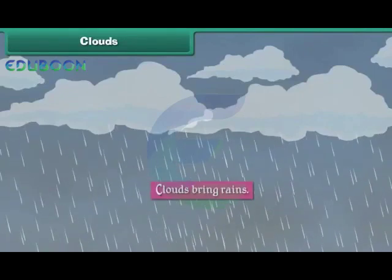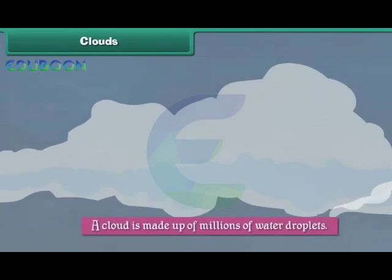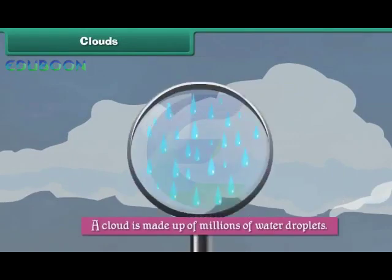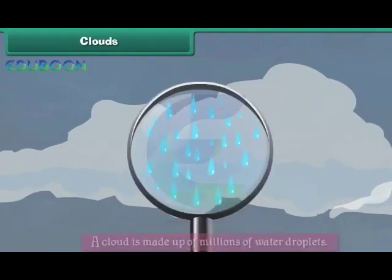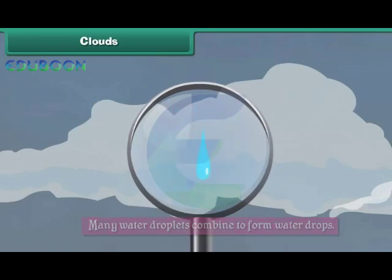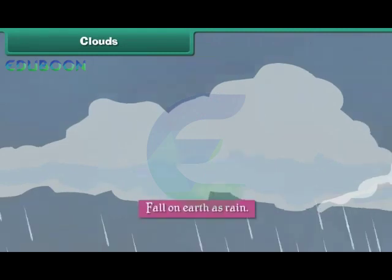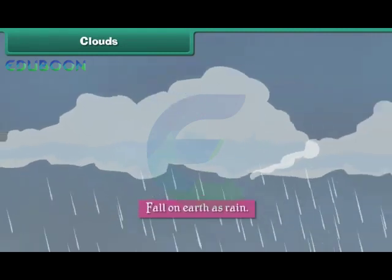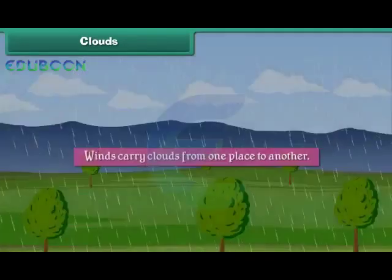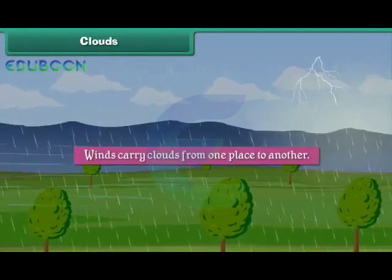Clouds bring rains. A cloud is made up of millions of water droplets. Many water droplets combine to form water drops. As the drops grow in size, they become heavy and fall on earth as rain. Winds carry clouds from one place to another.